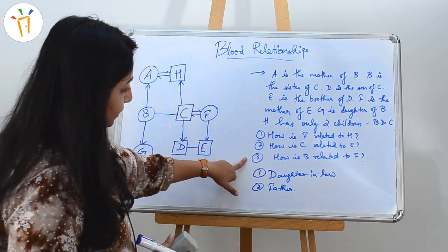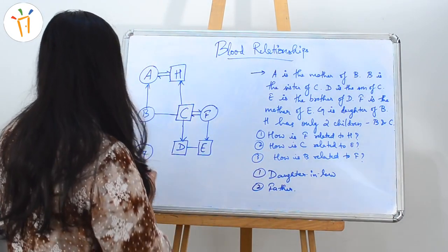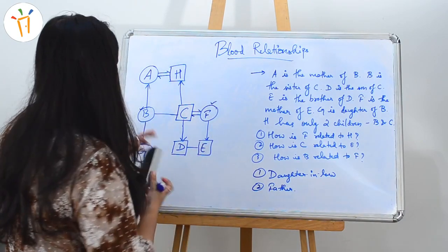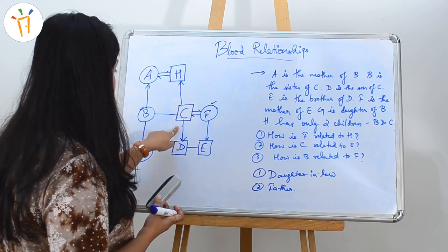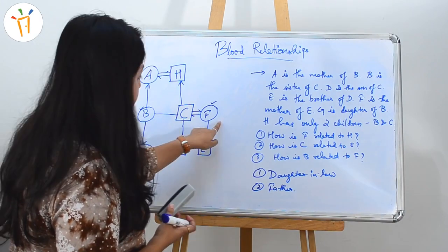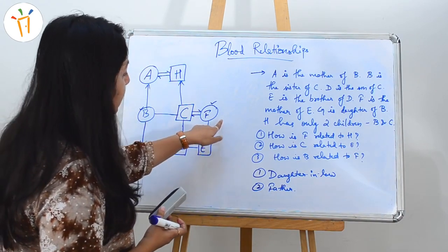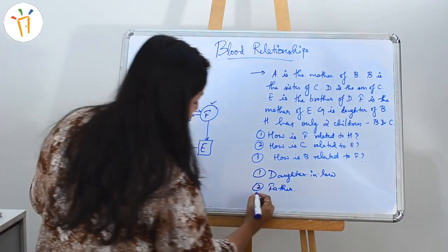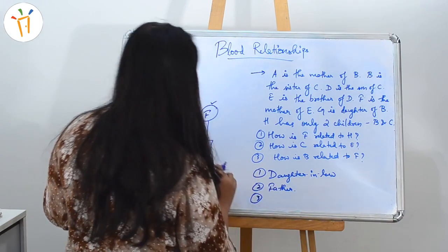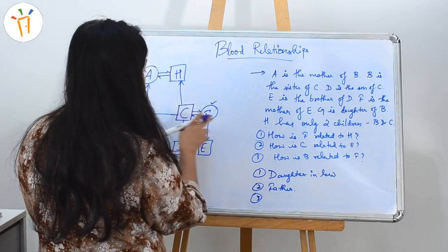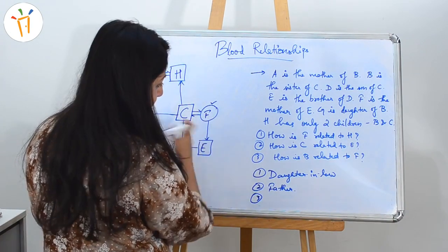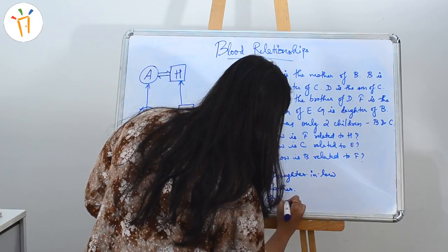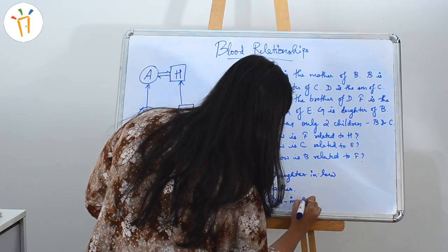Third part of the question: how is B related to F? This is B and this is F. Since B and C are siblings and F is the wife of C, F will be sister-in-law of B. Either way you can say — B will be sister-in-law of F. So the answer is sister-in-law.